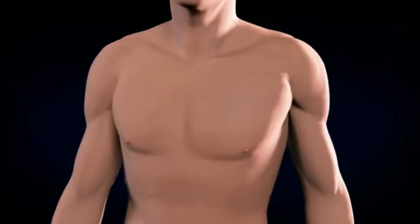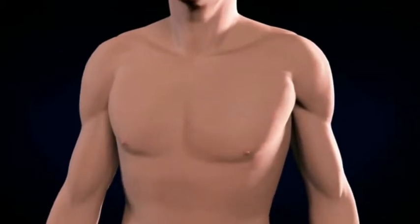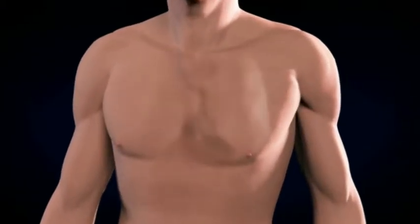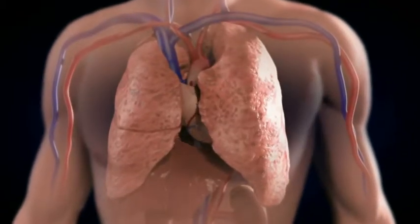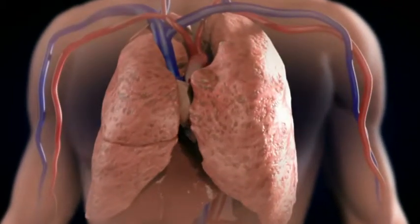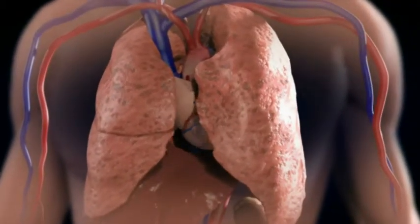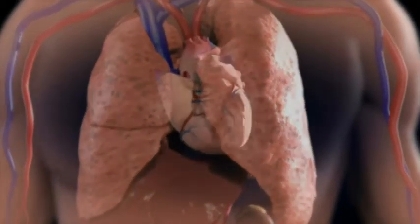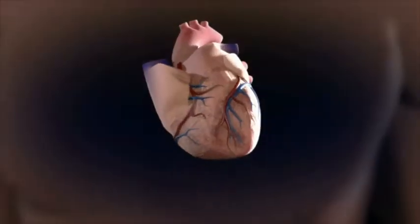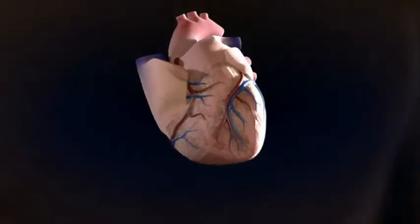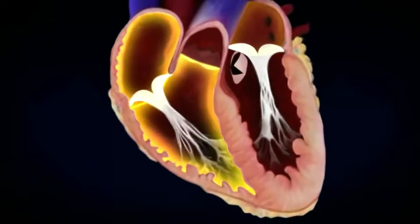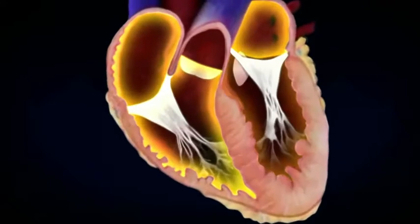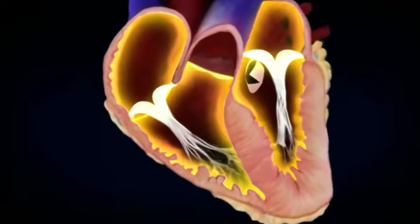The circulatory system supplies nourishment and oxygen to all of our organs and tissues through an intricate network of arteries and veins. The key organ in that system is the heart, which is divided into four chambers: the right atrium and right ventricle, and the left atrium and left ventricle.